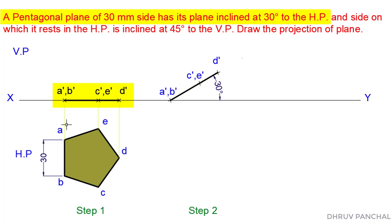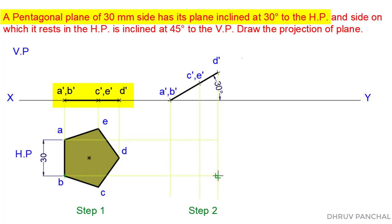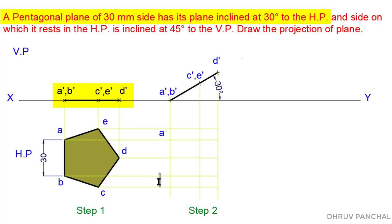Now, to draw the top view in Step 2, take projections of each point in the downward direction. Also, take projections of the top view from Step 1 in the right direction. Locate points A, B, C, D, and E, and join them as shown.